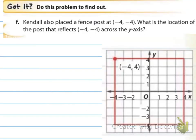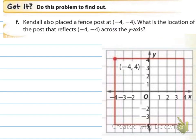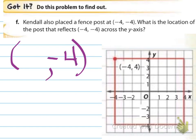Now this example is for you. Kendall also places a fence post at negative 4 comma negative 4. What is the location of the post that reflects across the y-axis? Pause the video and apply what you know. Hopefully you knew that across the y-axis the y stays the same and the x is the opposite, so your point should be 4 comma negative 4.